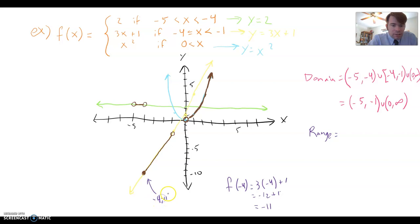So this point right here is actually the point negative 4, negative 11. But that means the range, therefore, starts at negative 11 with a square bracket because it does include negative 11. It stops up here. What is this point? Well, this would be 3 times negative 1 plus 1. That would be negative 3 plus 1. That's negative 2. And so it stops up there at negative 2.